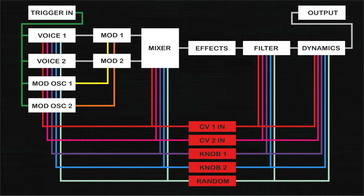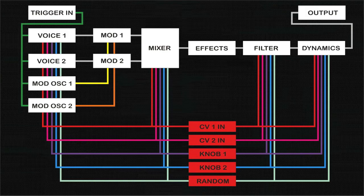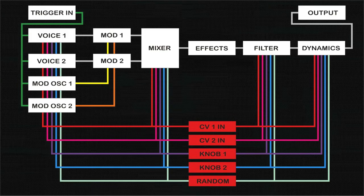Let's talk a little bit about the modulation sources. These include CV 1 and 2 inputs and definable knobs 1 and 2 located on the front panel, as well as a unique random number generator for each modulation destination.